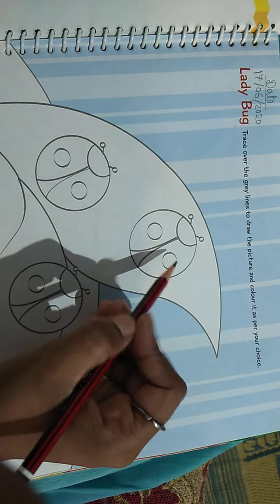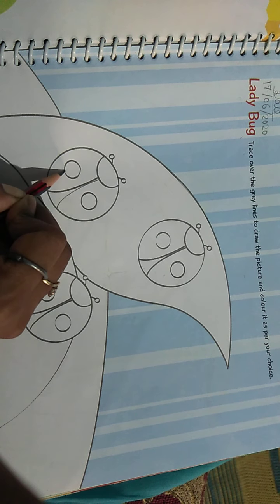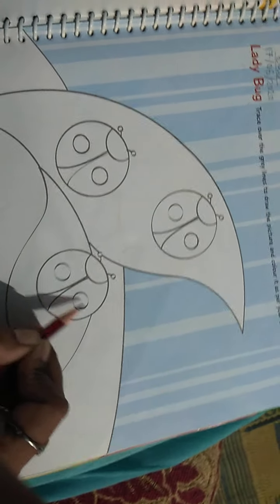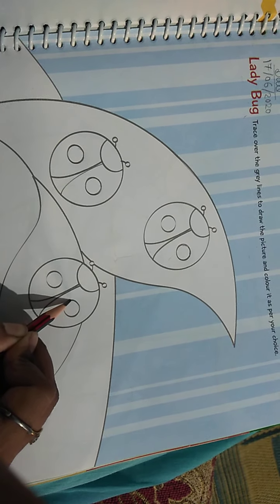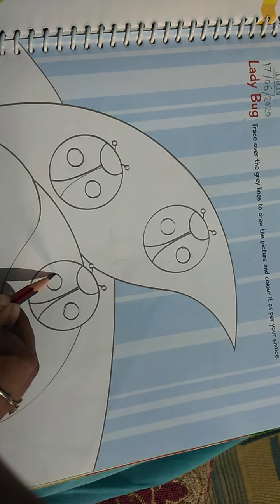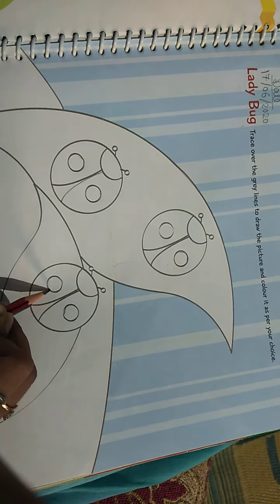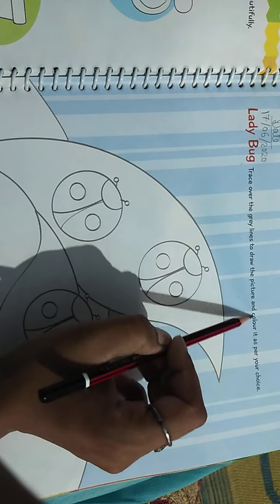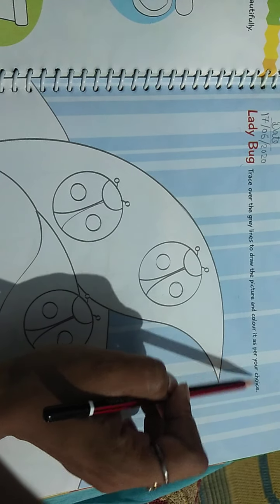With the help of pencil, you have to trace it so that it will be highlighted. Make it darker. I am doing it in some places because where it is limited, you need to trace all the places with pencil so that it will highlight.